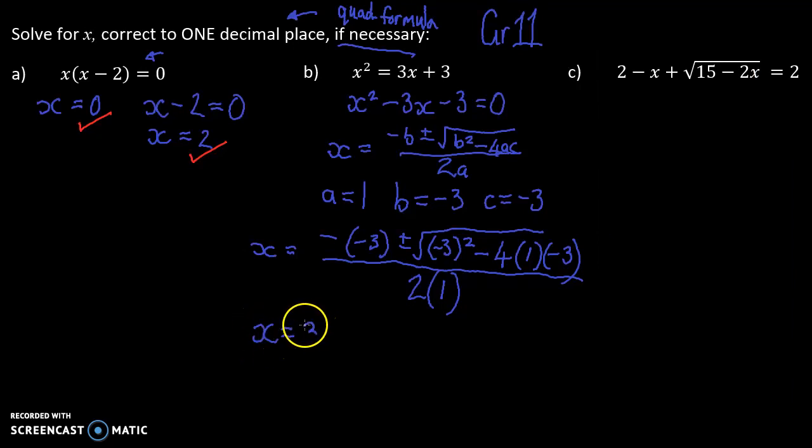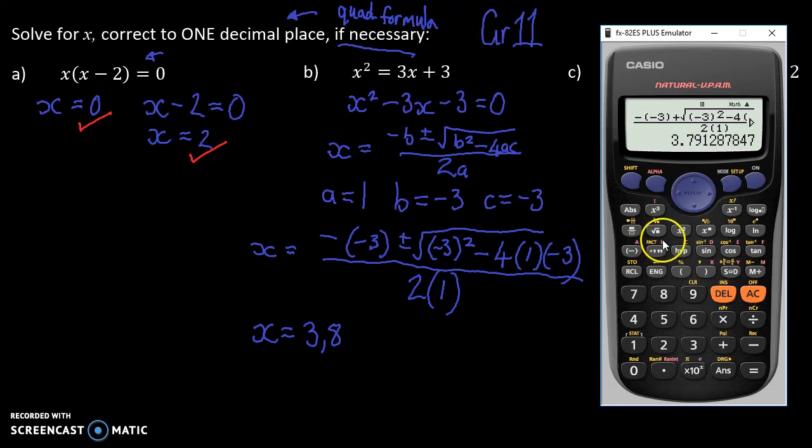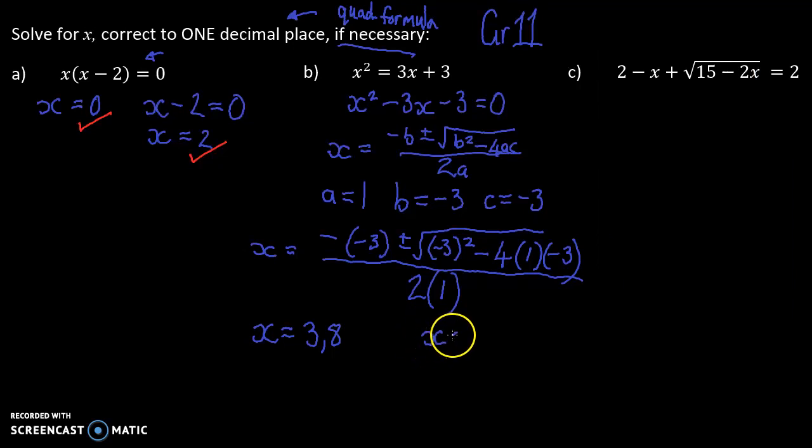X equals 3.8. How many answers do I need? Well, it's x squared, which indicates I'm going to get two different answers. And now I'm going to be sneaky. Rather than typing in everything again, I'm going all the way back and I'm just deleting that and putting a negative, which gives me x equals negative 0.8. Yes. So those are my two possible answers. Nice and easy, isn't it?